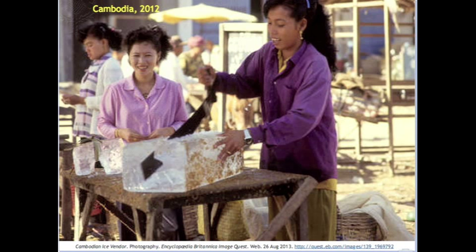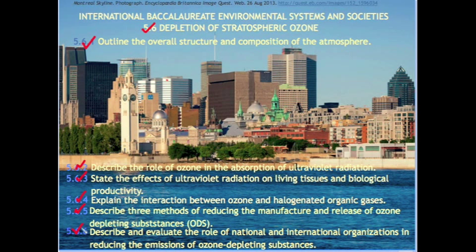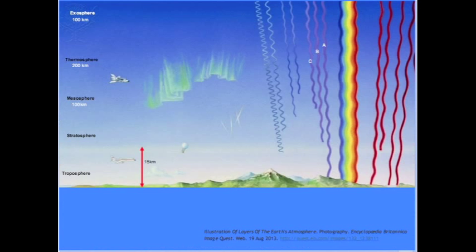Welcome. Today we examine Topic 5.6: Depletion of Stratospheric Ozone. As we outline the overall structure and composition of the atmosphere, describe the role of ozone in the absorption of ultraviolet radiation, state the effects of ultraviolet radiation on living tissues and biological productivity, explain the interaction between ozone and halogenated organic gases, describe three methods of reducing the manufacture and release of ozone-depleting substances (ODS), and describe and evaluate the role of national and international organizations in reducing the emissions of ozone-depleting substances.